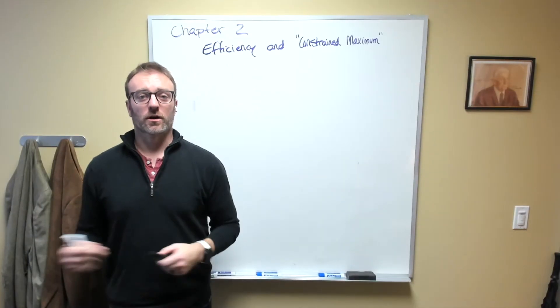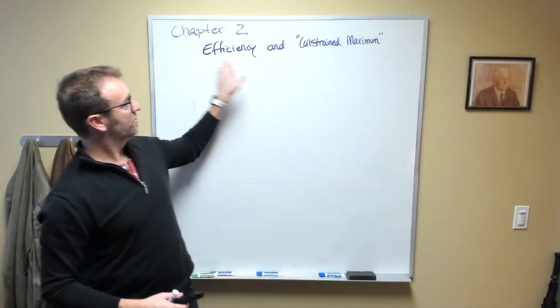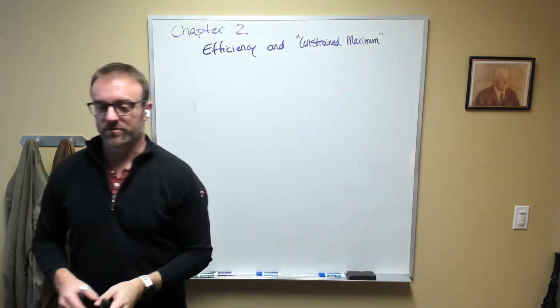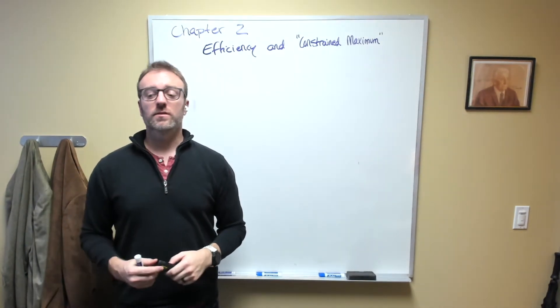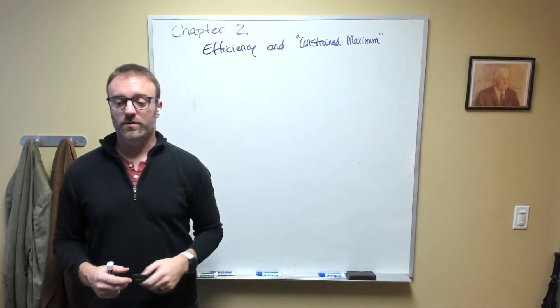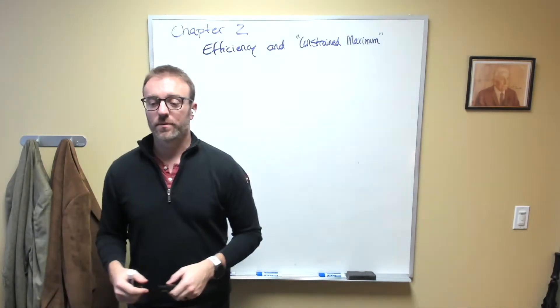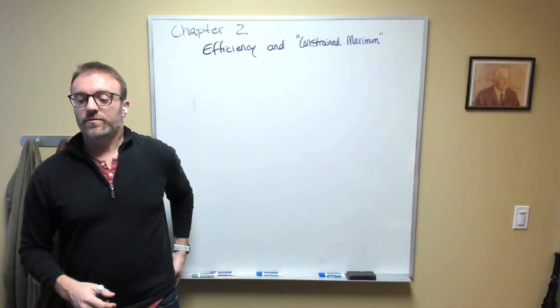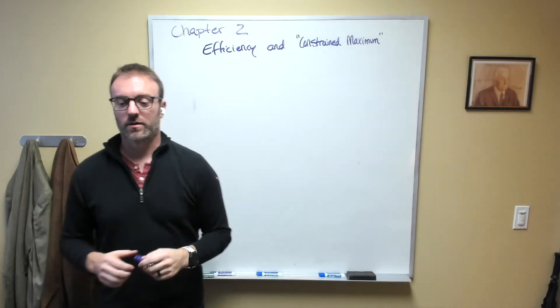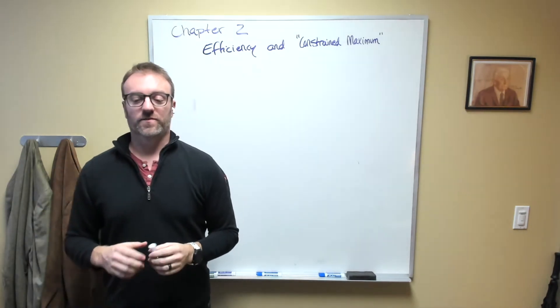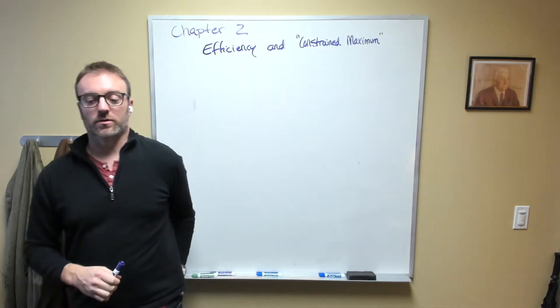Welcome to part two of chapter two. Today we're going to talk about the concepts of efficiency and constrained maximums. Within the structure of private property rights, a person can use resources under his or her control to produce other assets. An efficiently produced amount of some good is referred to as a constrained maximum of that good.